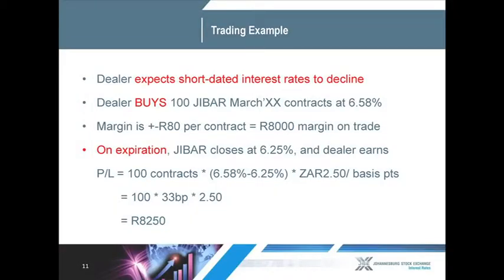As a trading example, if a dealer is expecting interest rates to decline over time, he could go into the market and buy, let's say, 100 JIBAR futures at a rate of 6.58%. The margin on that contract is 80 rand per contract, so on 100 contracts that would be 8,000 rand margin on that trade. On expiration, assuming that JIBAR closed at 6.25% — that's a 33 basis point movement — the profit made by that dealer would be 8,250 rand, based on 8,000 rand margin. So you can see the gearing effect straight away from a futures position.